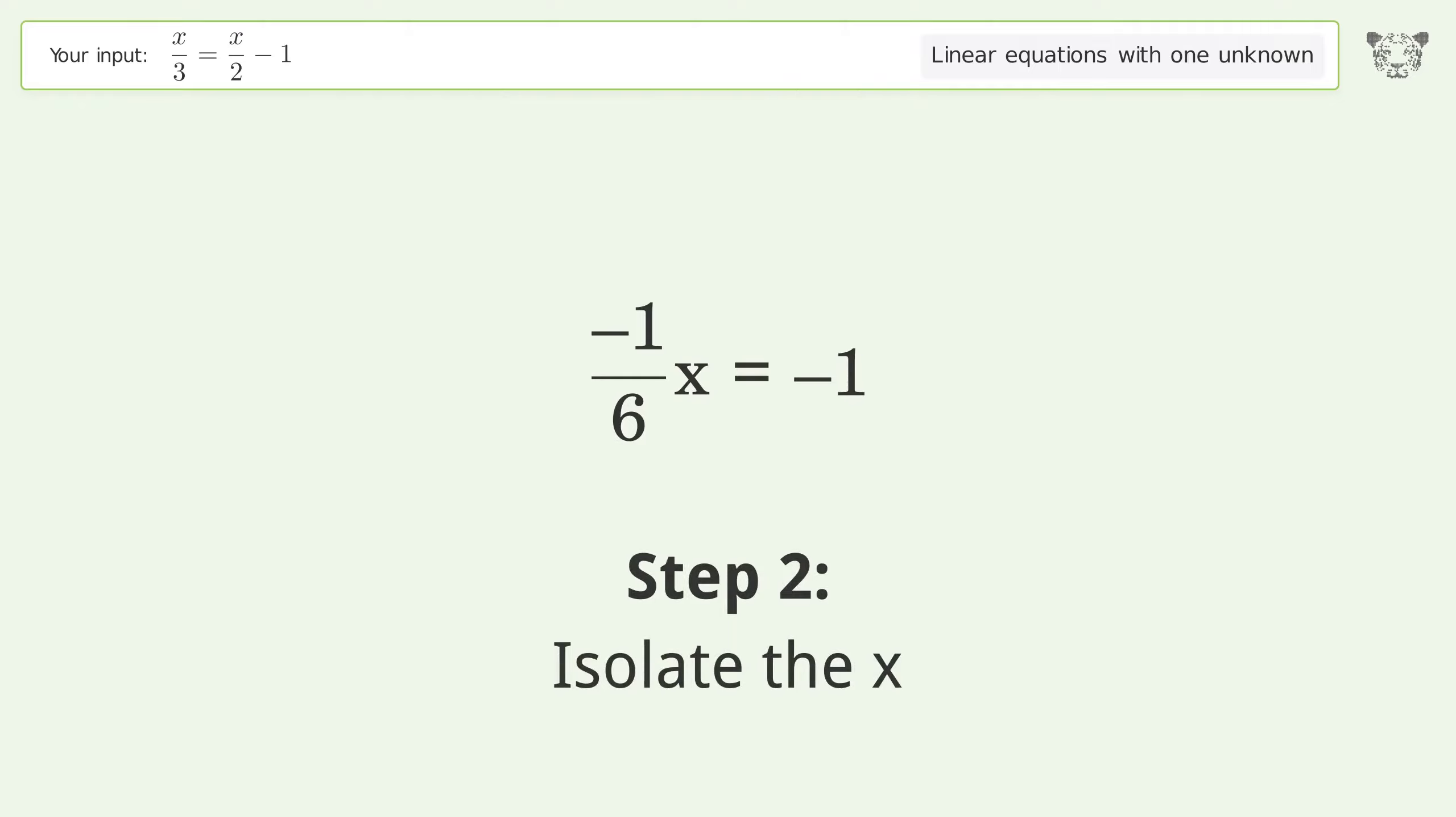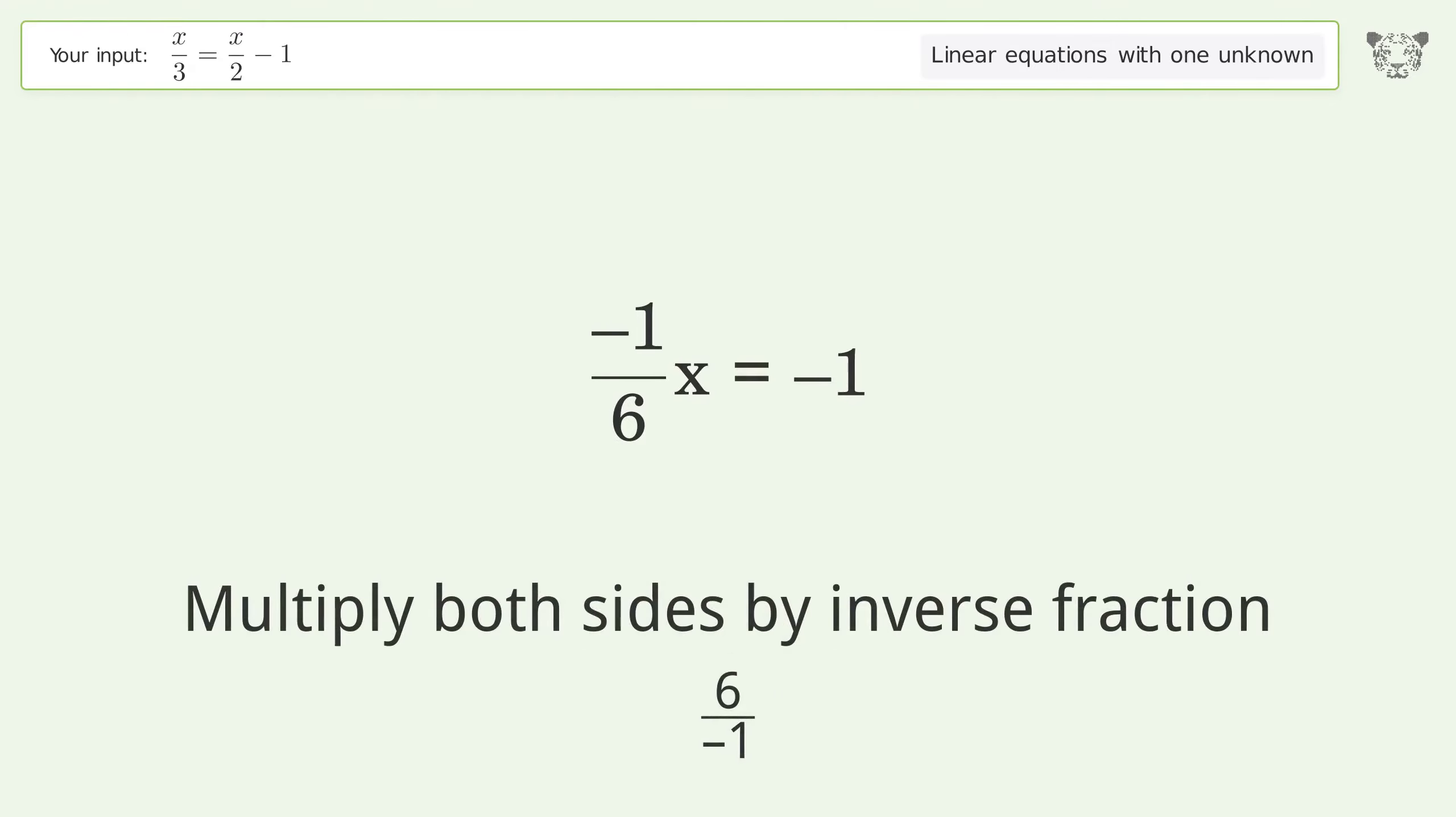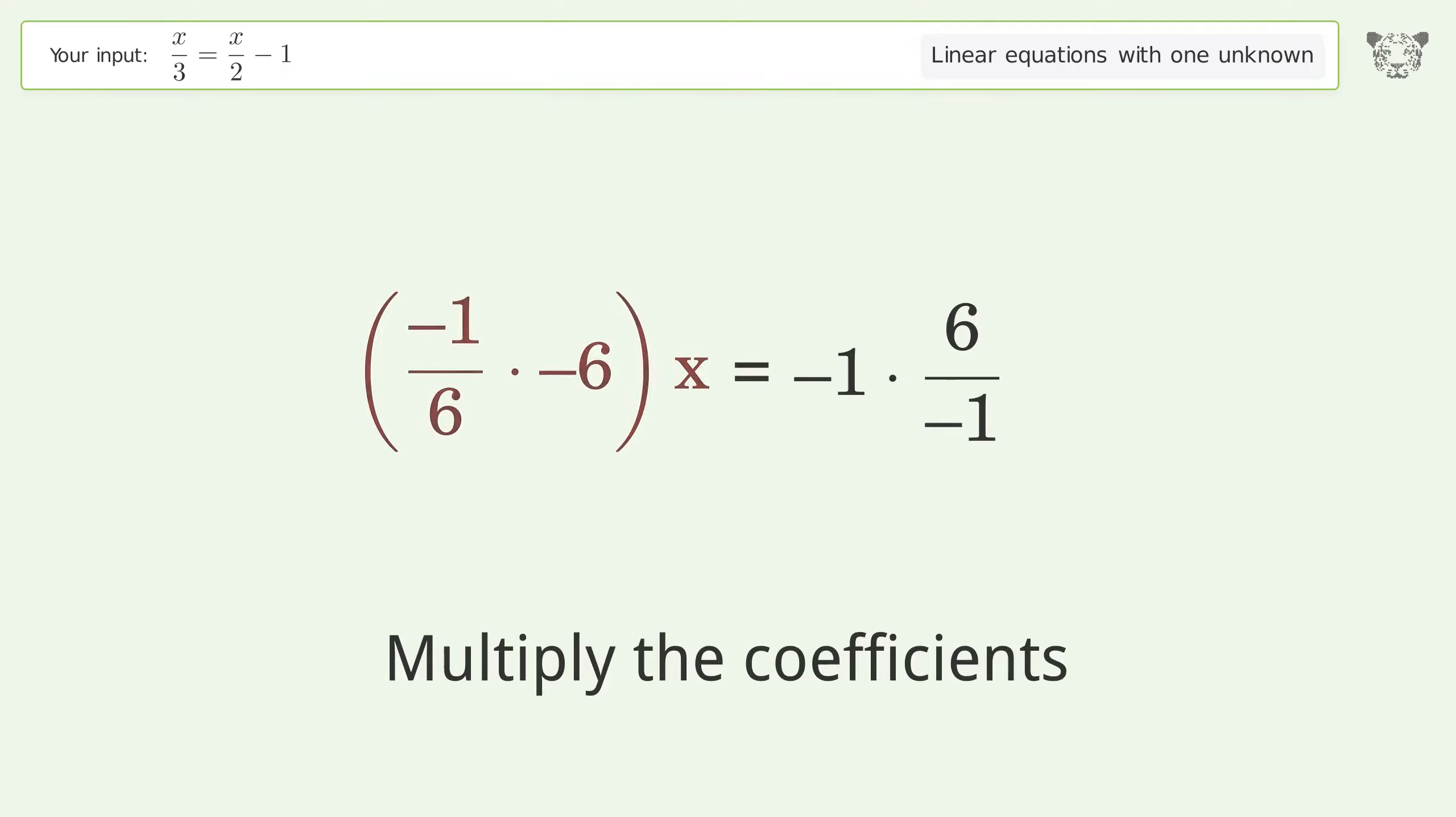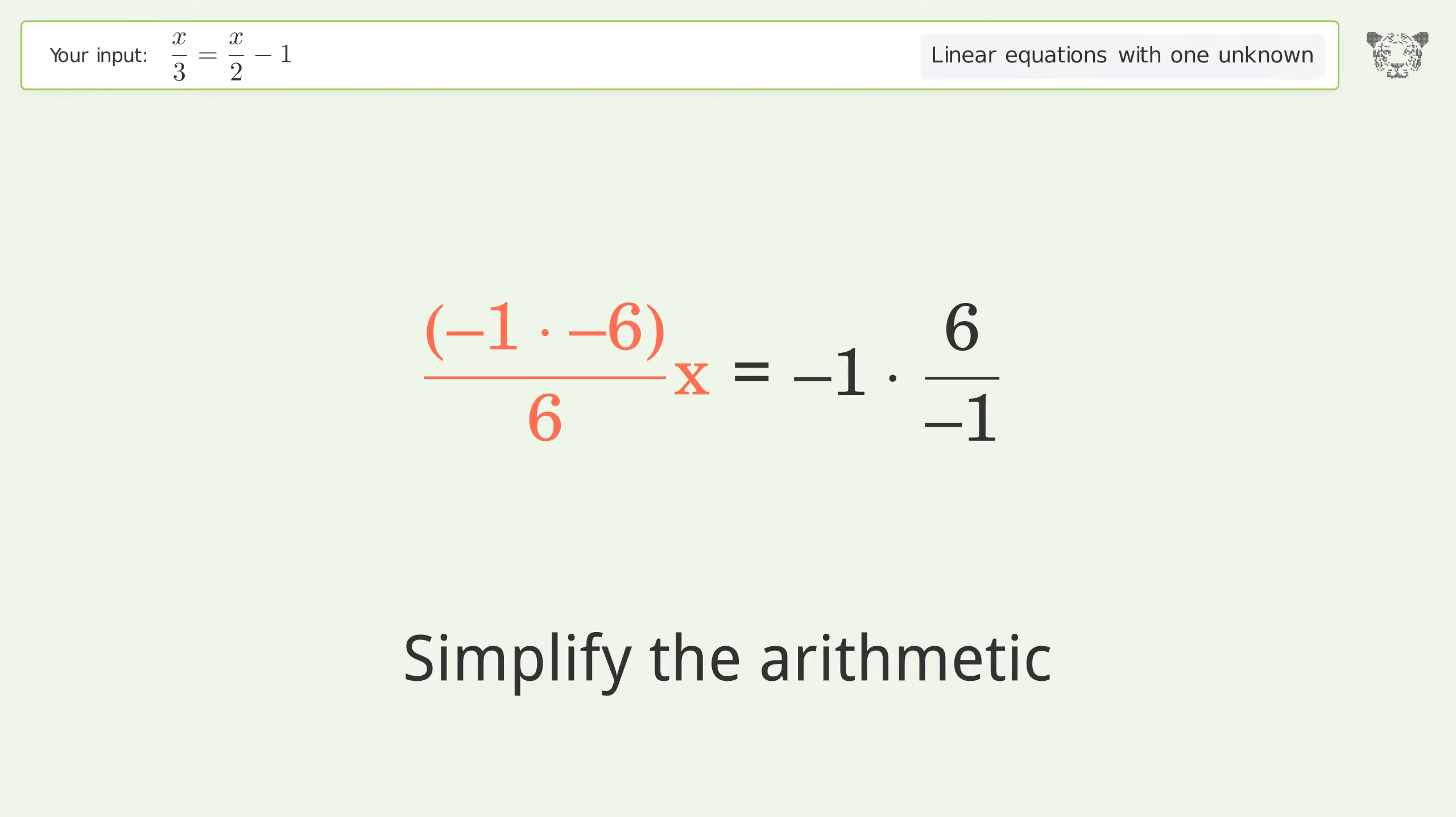Isolate the x. Multiply both sides by inverse fraction 6 over negative 1. Group like terms. Multiply the coefficients. Simplify the arithmetic. And so the final result is x equals 6.